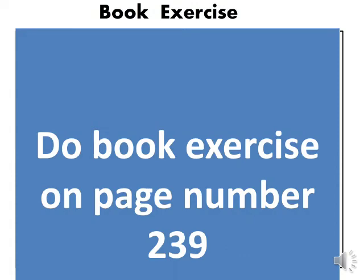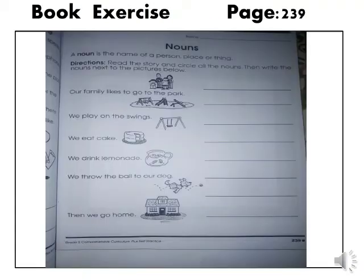Your today's task is to do the book exercise on page number 239. A noun is the name of a person, place or thing. Directions: Read the story and circle all the nouns. Then write the nouns next to the picture below.